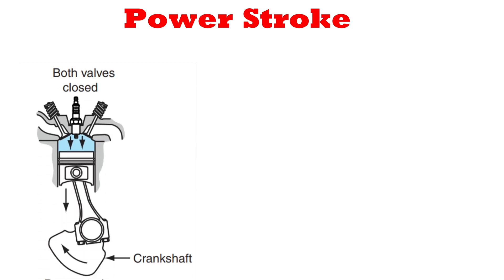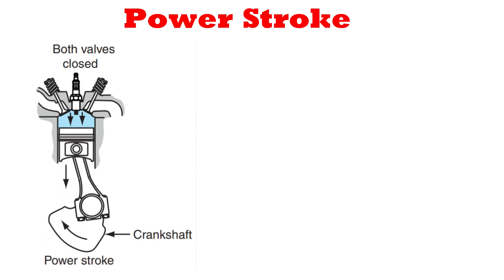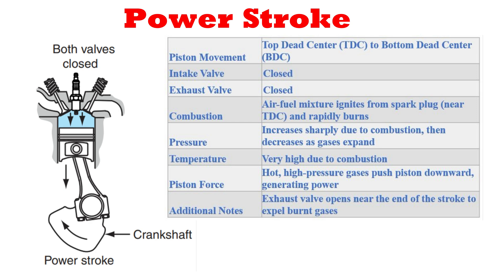Power Stroke: As the piston approaches TDC on its compression stroke, the compressed air-fuel mixture becomes very explosive. When the ignition system generates a spark at the spark plug, the fuel ignites. The air-fuel mixture burns, but it must not explode. As the mixture burns, it expands, forcing the piston to move down in the cylinder until it reaches BDC. The action of the piston turns the crankshaft to power the car. The power stroke is sometimes called the expansion stroke.